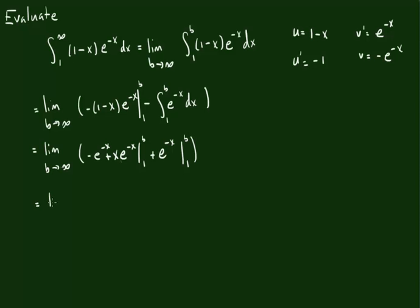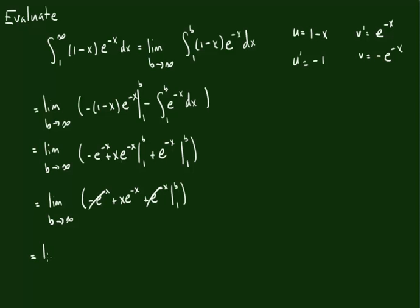You can do it all at once, so we can do a little simplification here. We have a negative e to the negative x, a positive x times e to the negative x, and a positive e to the negative x, all evaluated from 1 to b. We can see the negative e to the negative x and the positive e to the negative x cancel. The only thing we really need to evaluate is x times e to the negative x.